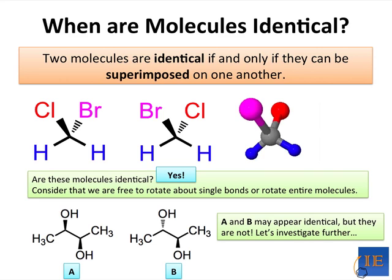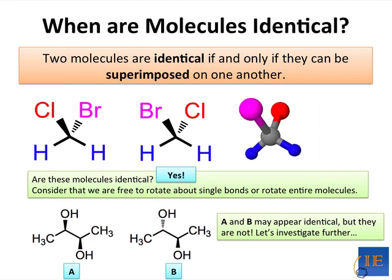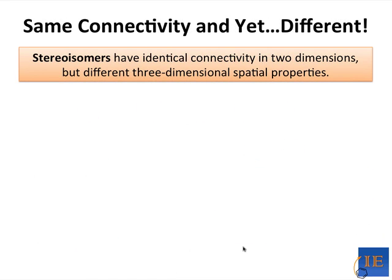Here's another example. Molecules A and B may look identical from the perspective of their connectivity: CH3 is connected to a C, which is connected to an O and a C, and the same pattern of connectivity is observed in both cases. However, an important difference is that in the left-hand structure A, a bond is coming out towards us, while in the right-hand structure it's going away from us. So we might suspect these molecules are different — and in fact they are. We call them stereoisomers. They have identical connectivity in two dimensions but differ in their three-dimensional spatial properties and shape.